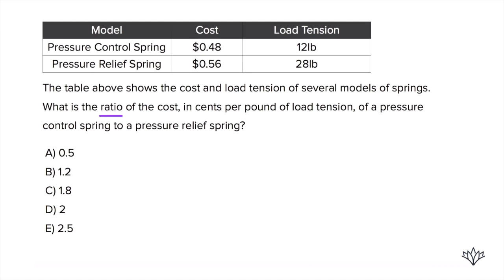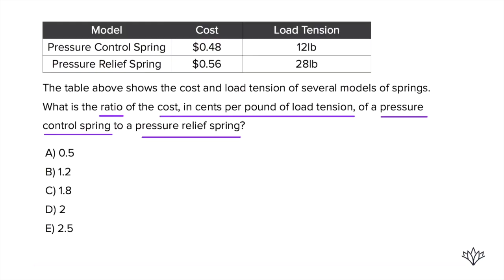It's asking for a ratio in cost per pound of load tension. Cost per pound of load tension of what? The pressure control spring to a pressure relief spring. So we need to figure out the cost per pound for each of these. Let's start and do it for the pressure control spring.